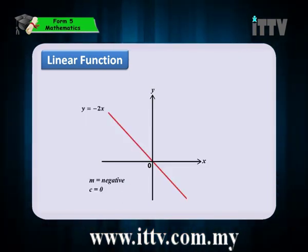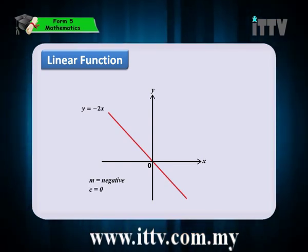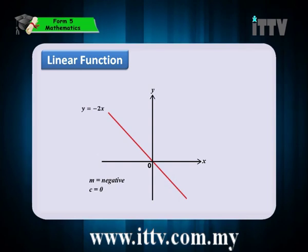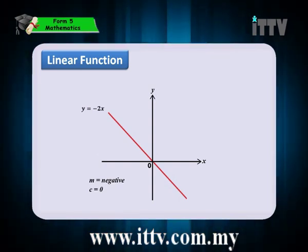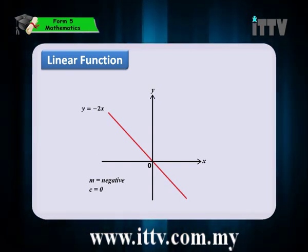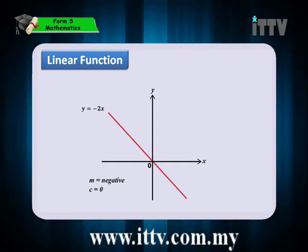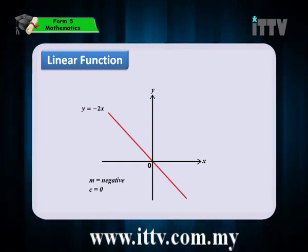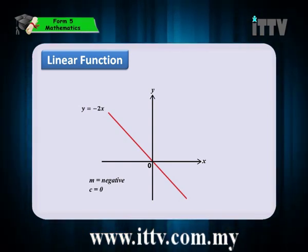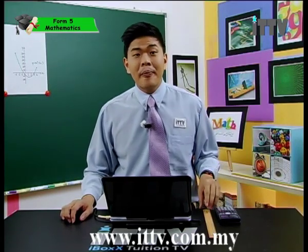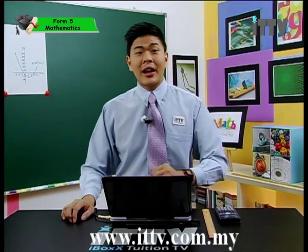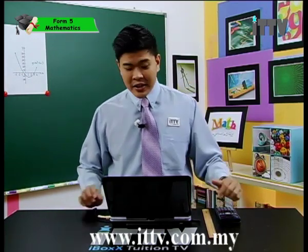Now let's compare it to this graph. The equation is y equals negative 2x. This graph has a negative gradient because the straight line is sloping downwards from left to right. The gradient is negative and the y-intercept is 0 because it cuts and intersects the origin. So if m is positive, the graph slopes upwards from left to right, and vice versa if the gradient is negative.